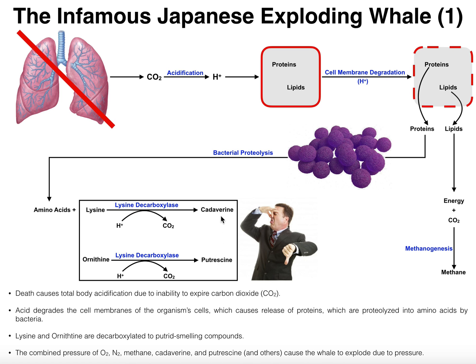Cadaverine and putrescine smell really, really bad. If you've ever worked in a morgue, or you're a police officer investigating a scene with a dead body, the smell of dead bodies is actually these two molecules. Cadaverine gets its name because it's the smell of a cadaver — a dead body — and putrescine gets its name because it's putrid. These two molecules are mainly responsible for the terrible smell associated with a decaying body.